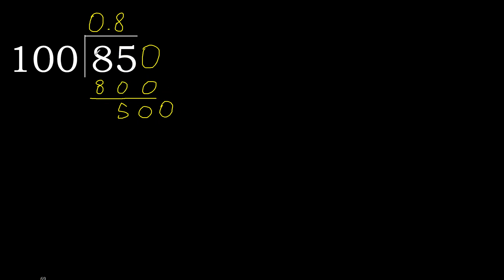500. 100 multiplied by 5 gives 500. Subtract 0. Therefore finish it.